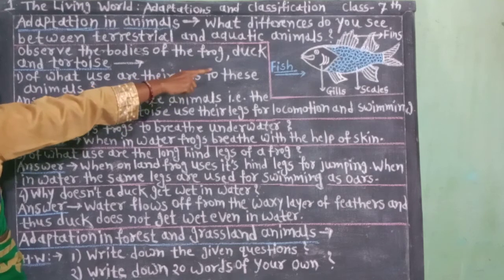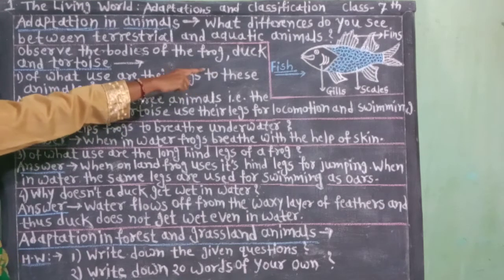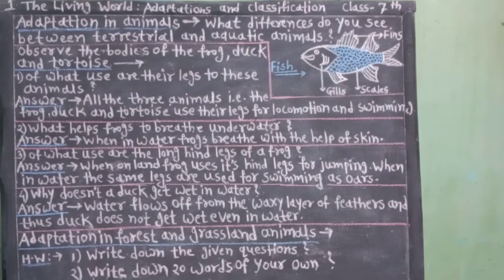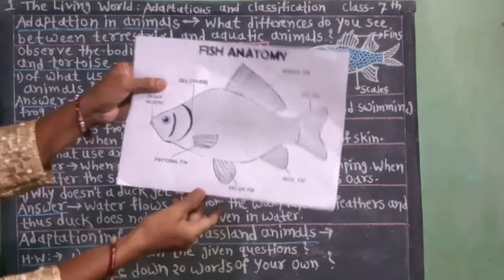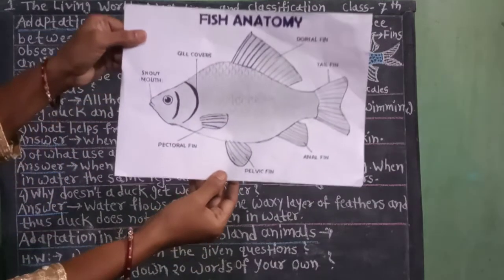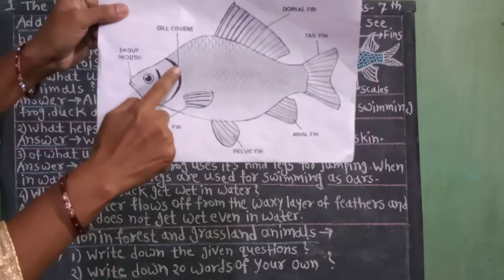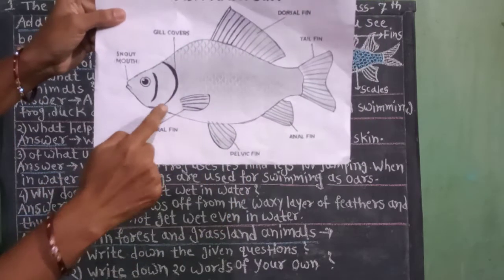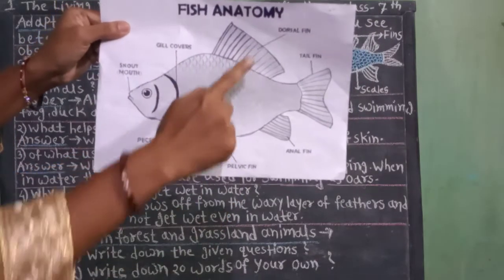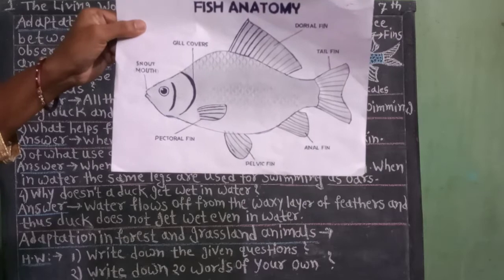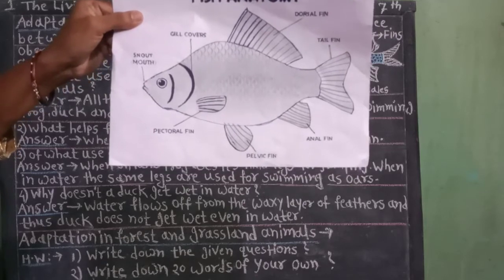Look at the diagram of fish, then look at the chart. Gills — gills means kalle. Fins — fins means pur.